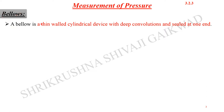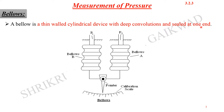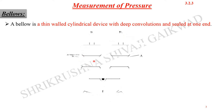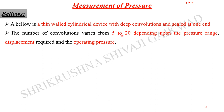Apart from the corrugated diaphragm, we have another type: the bellows. A bellows is a thin-walled cylindrical device with deep convolutions, sealed at one end. The convolutions are visible, with one end sealed and the other kept open — one can be kept as a reference and the other connected to the pressure to be measured. The number of convolutions varies from 5 to 20 depending on the pressure range and displacement required.